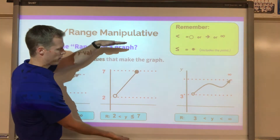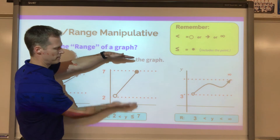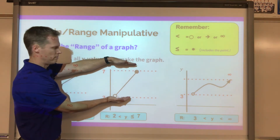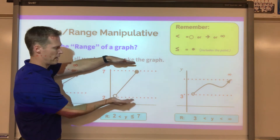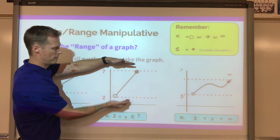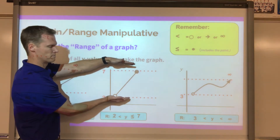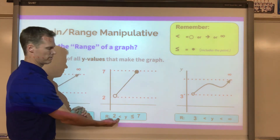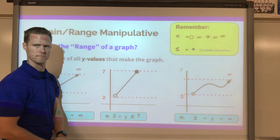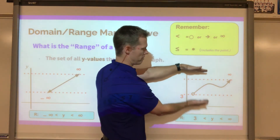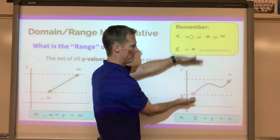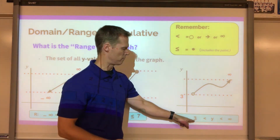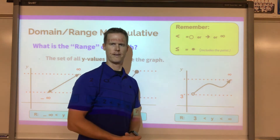For the next graph, the floor and ceiling stop at two and seven respectively. The range goes from two to positive seven — using an equal sign for the solid endpoint and a less-than symbol for the open circle. For the last graph, the floor and ceiling stop at three and infinity, so the range goes from three up to positive infinity.